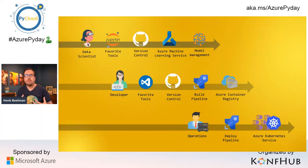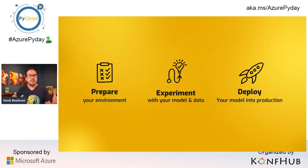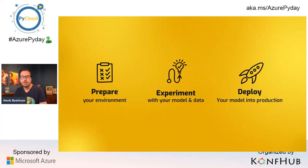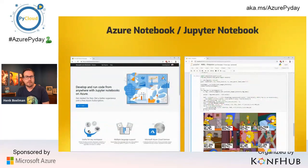Here's how the flow looks: we have a data scientist team that trains a model and delivers it to model management. Developers build software around the model using their favorite tools, version control, build pipelines, and wrap it in a Docker container. An operations team operationalizes the model using deploy pipelines and Azure Kubernetes Service. From an operations perspective, it's just deploying a container. Finally, a client calls the API. To get started, you first prepare your environment — via the Azure portal, Visual Studio Code, or Jupyter/Azure Notebooks.